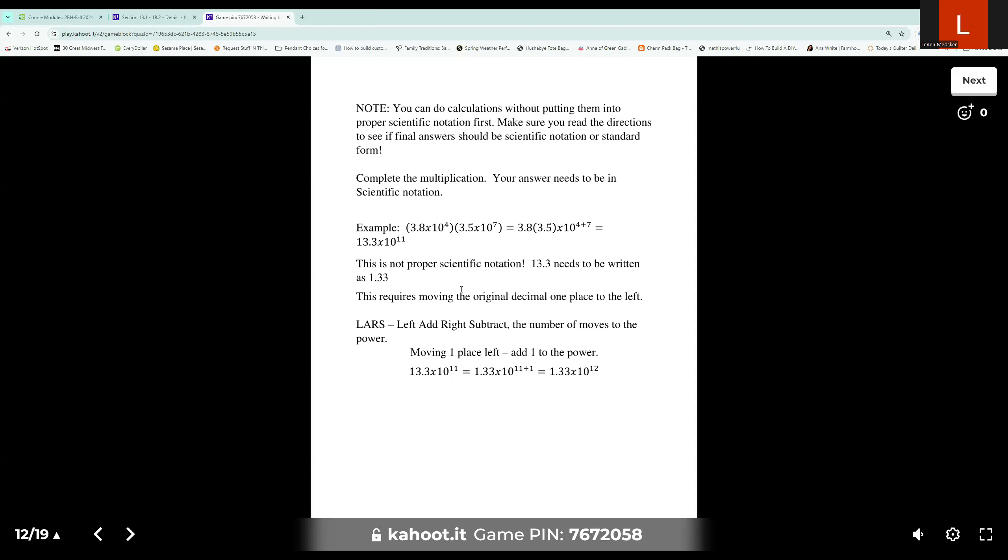So notice this is like the ones we did before. I do want to point out that this times is hidden here. It's not dividing. They'd have to put a divide symbol. If you don't see anything between two parentheses, it is understood that that is multiplying. Okay. So 3.8 times 3.5 times 10. And then we would be adding our exponents since we were multiplying. So it'd be 4 plus 7. So I get 13.3 times 10 to the 11th. That is not proper scientific notation. 13.3 should have been a 1.33. We need the decimal to be right after that first digit. This requires moving the original decimal one place to the left. So because of LARS, which is our rule for that, if we move left, we add. If we move right, we subtract the number of moves of that power. So 13.3, notice it would move one place to the left to become 1.33, which means we add one to our power, which makes it 1.33 times 10 to the 12th.